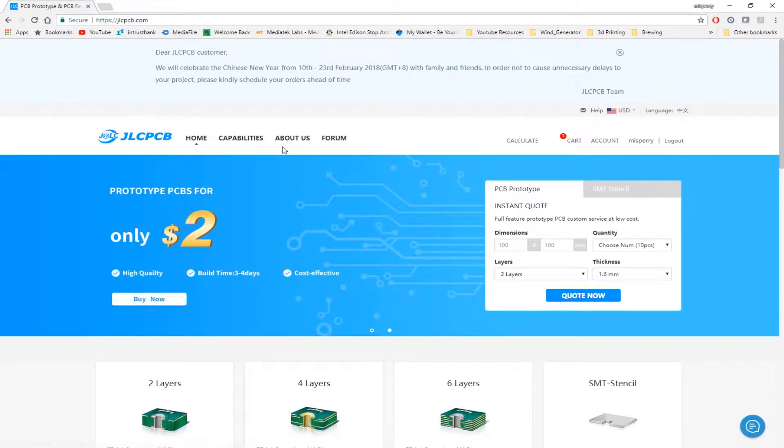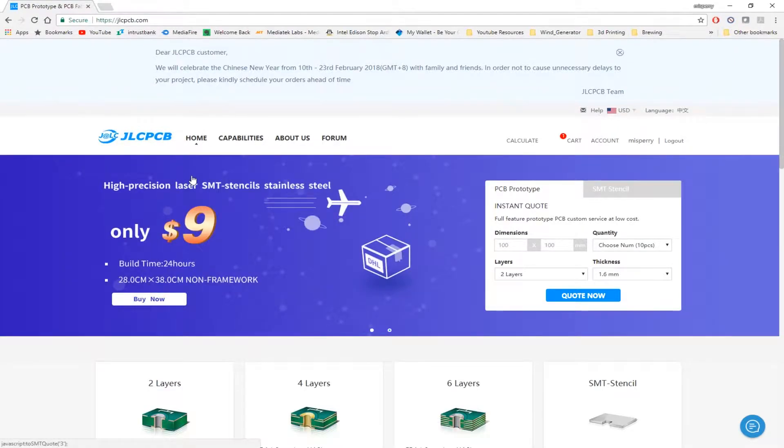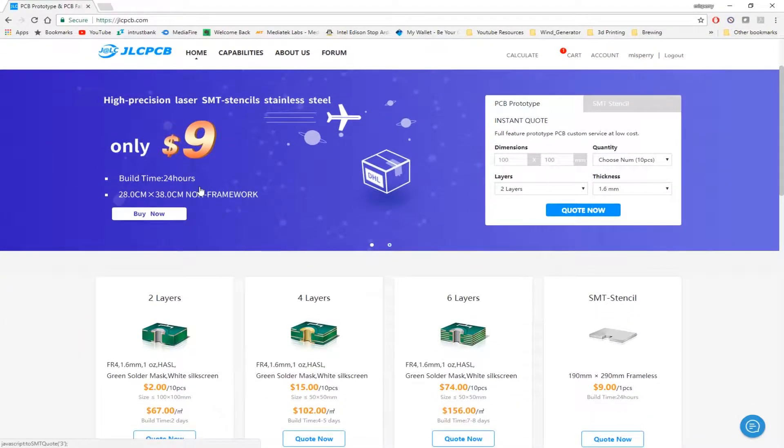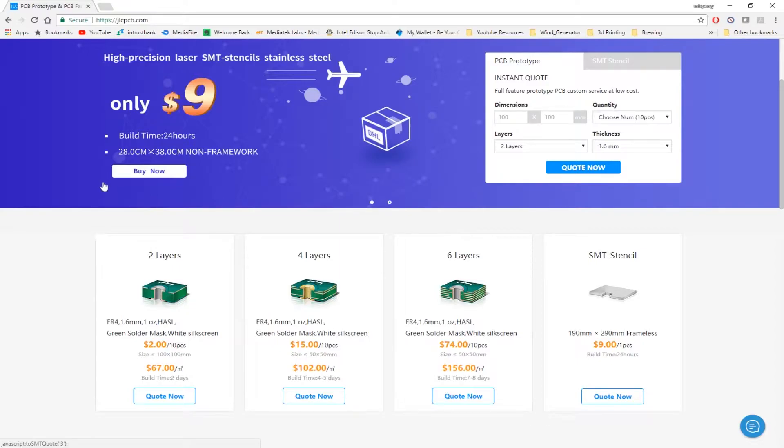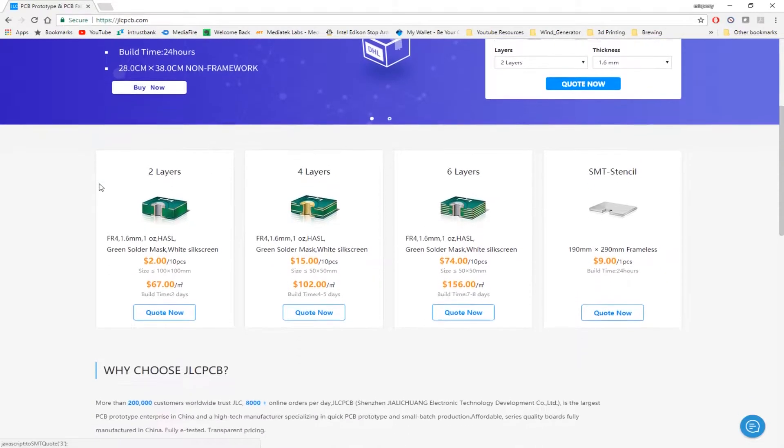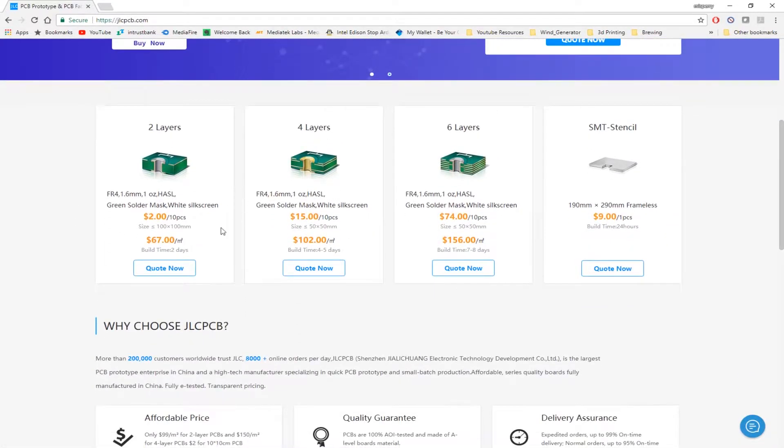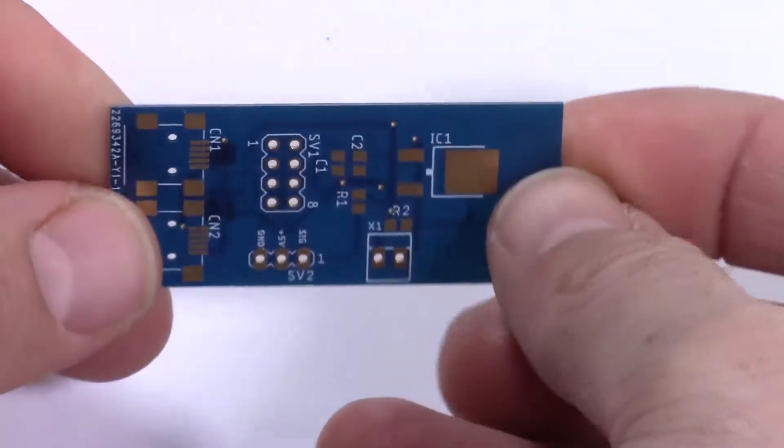Today's video is sponsored by JLCPCB.com. This is a great PCB fab house. They offer some of the best prices for getting PCBs made in the market today, especially if you're on a budget. They offer up to six layer PCB fabrication, even with a provided SMT stencil based on your design. When I started using this service, I was amazed at the quality of the circuit boards.